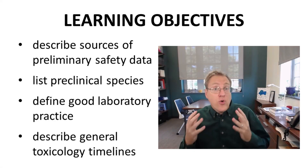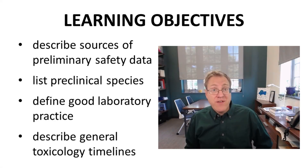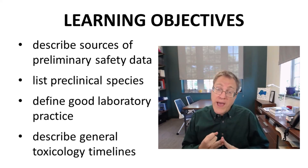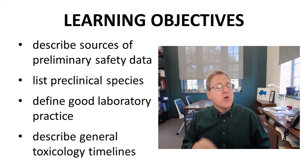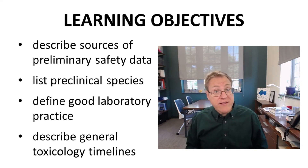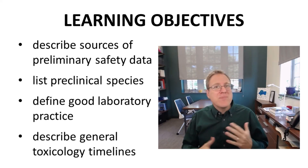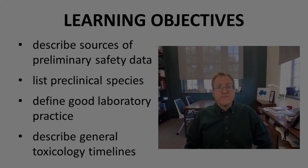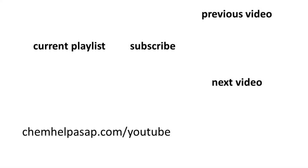We have described the origins of in vivo safety data. We have listed the common preclinical species — mouse, rat, dog, and monkey. We have defined good laboratory practice, GLP, and described the timelines for general toxicology studies. That was certainly a quick review of in vivo preclinical safety studies. If you enjoyed the video, please subscribe to the channel, make a comment, ask a question, or leave a like. Take care.